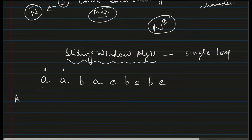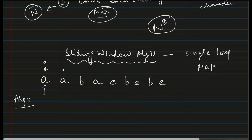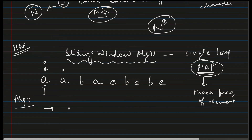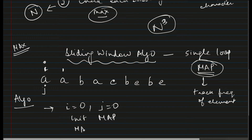Now let's come back to the question. We need to return the size of the longest substring. We'll have a pointer i and another pointer j. We'll also take a hash map — we need it because we have to check if a substring contains k unique characters, meaning we must track the frequency of every element. The map stores each character and how many times it has occurred. We also use a maximum variable to track the length of the substring, initially set to minus 1.